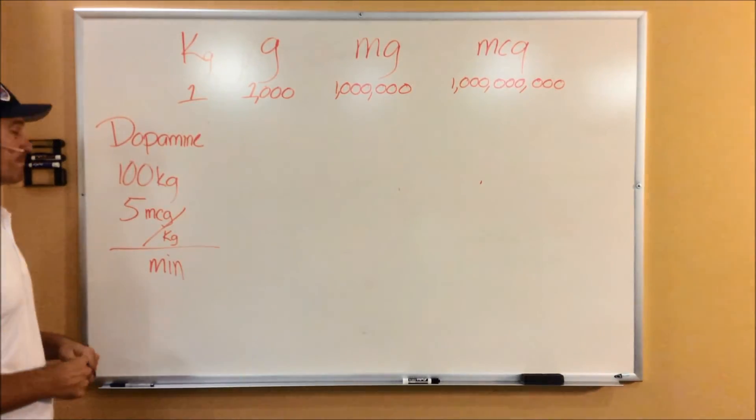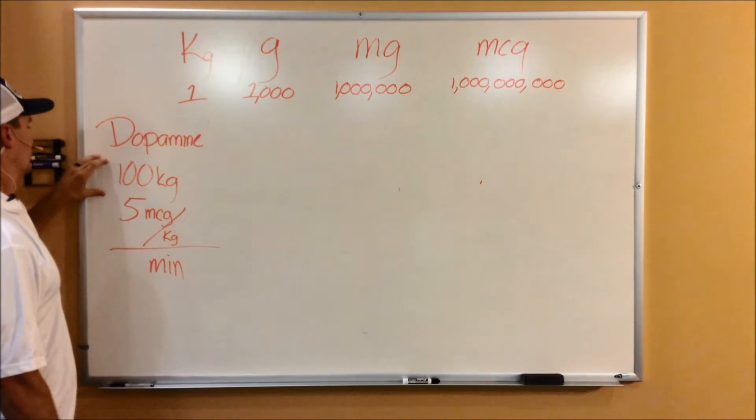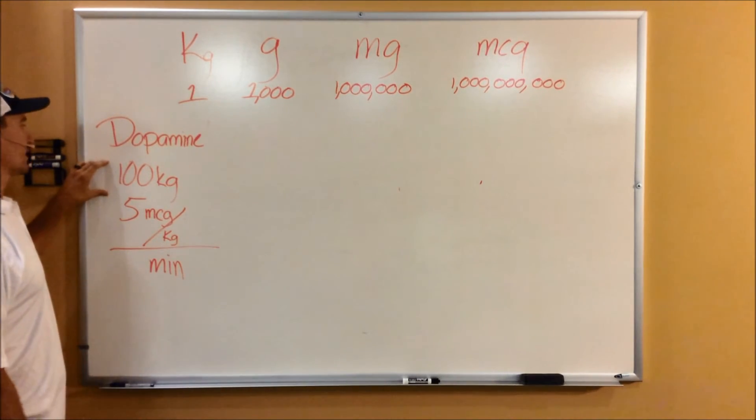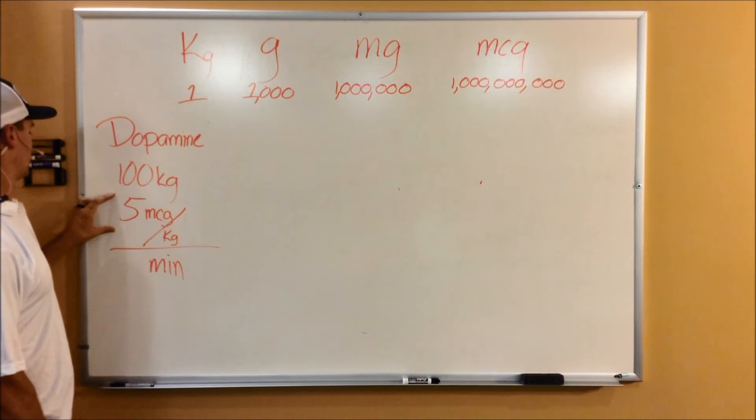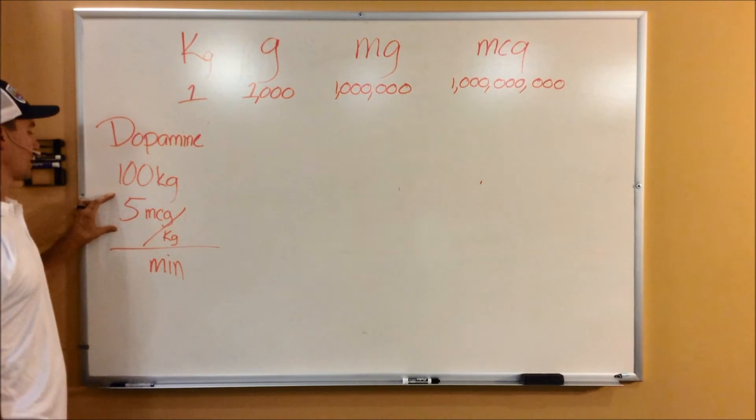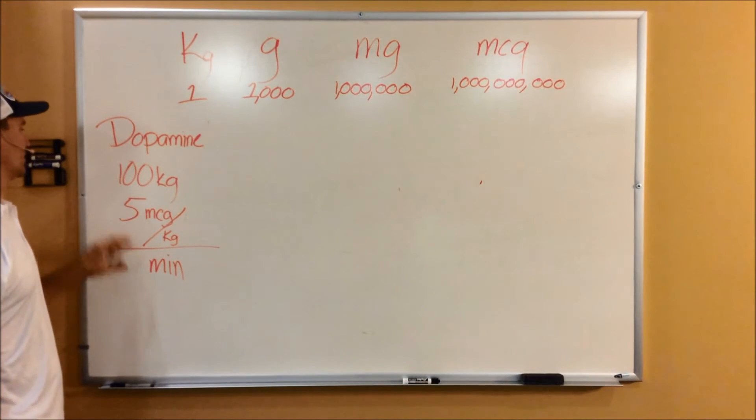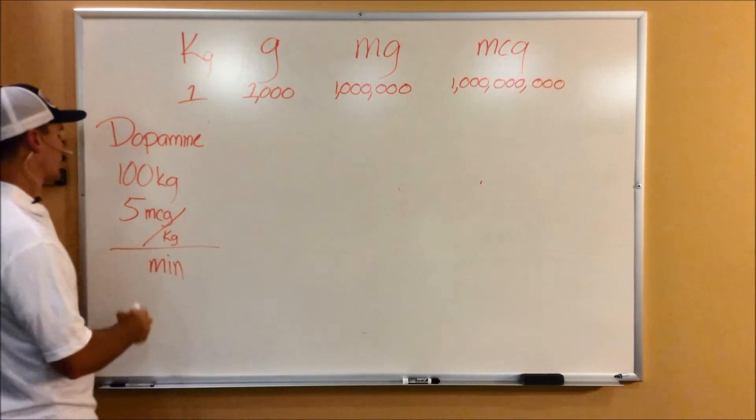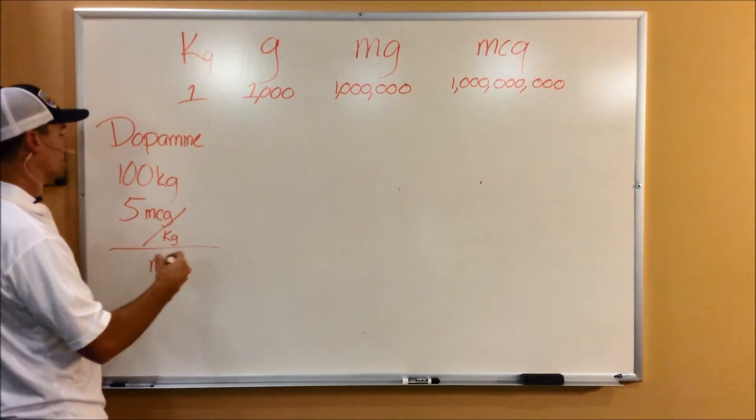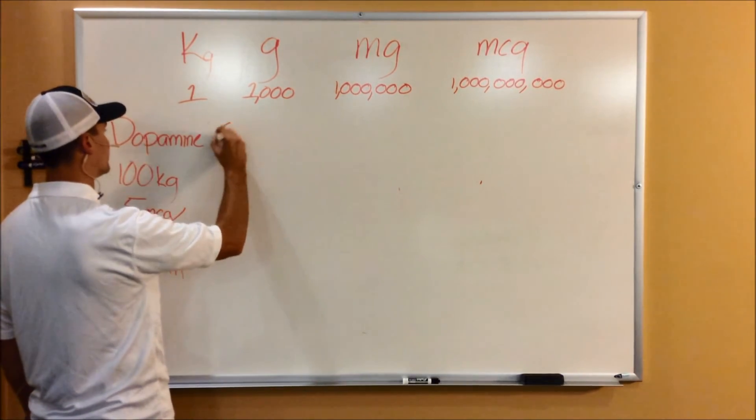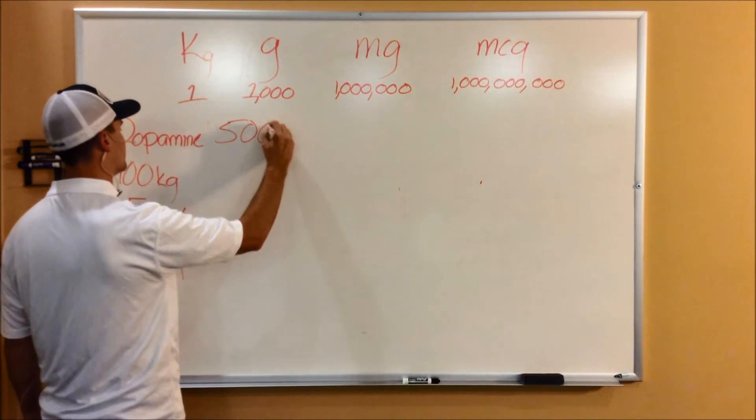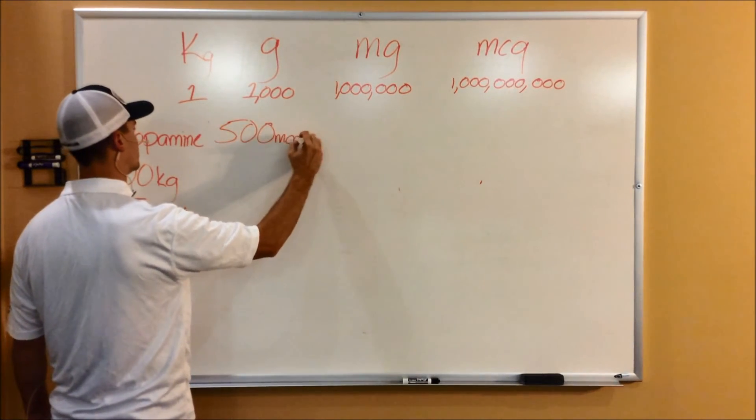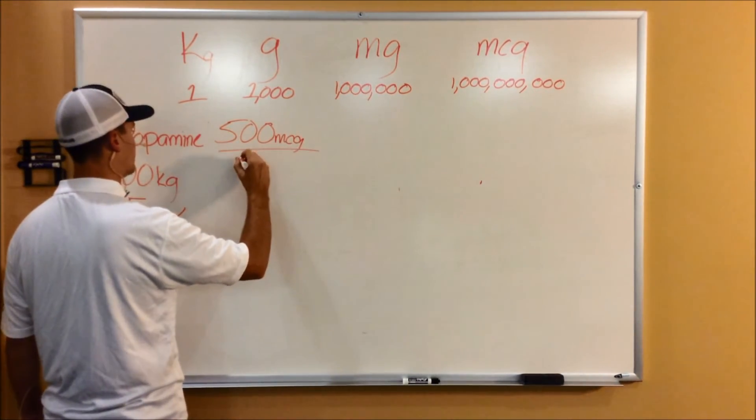So now let's do dopamine. So just for simplification, we're going to make the patient 100 kilos. So with a dose order to give of 5 micrograms per kilogram per minute, you can go ahead and plug in the patient's weight into this. So if you're giving 5 micrograms per kilogram at 100 kilograms, you've got 500 micrograms that you need to give per minute.